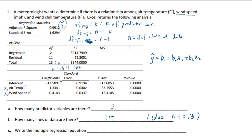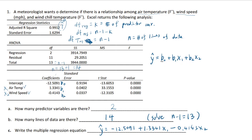Because these are the coefficients b0, b1, and b2, we know that it's going to be y-hat equals negative 12.5091 plus 1.3341·x1 minus 0.4143·x2. All I'm doing is replacing b0, b1, b2 by these values, and the result is this equation. So that is the regression equation.